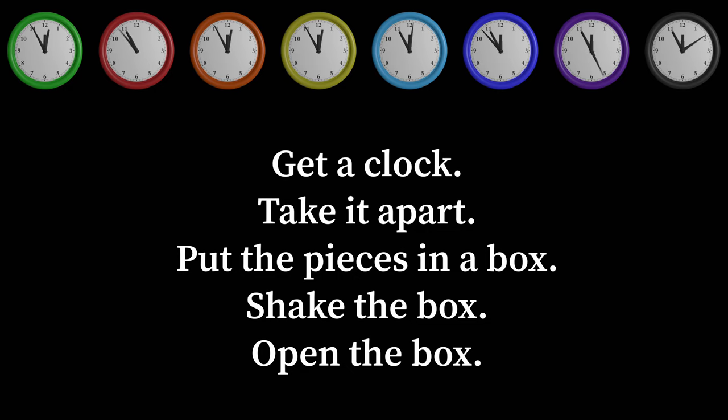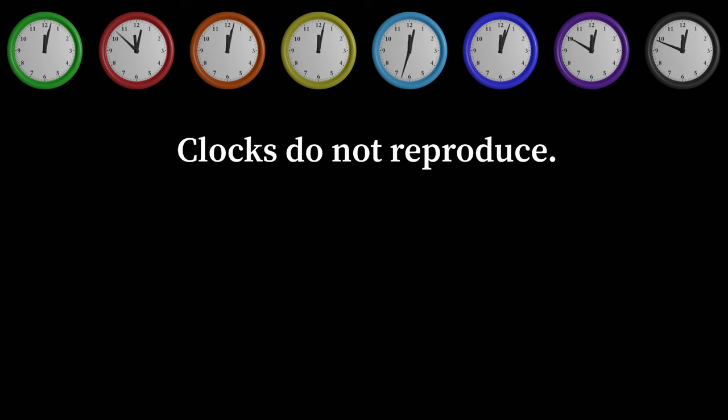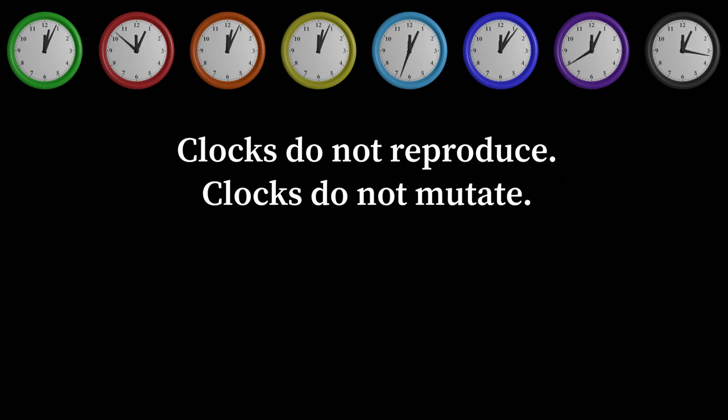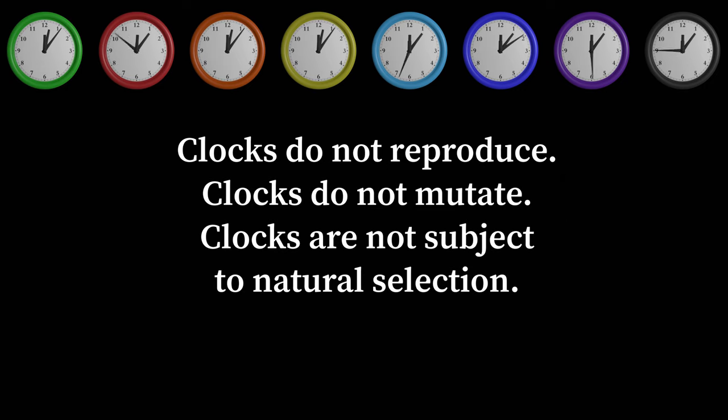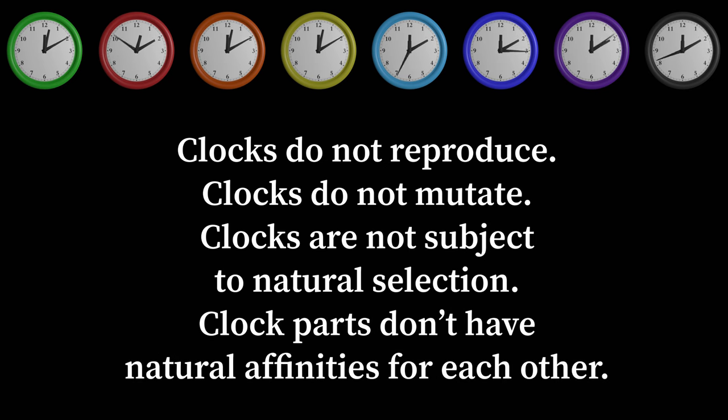Actually, there are four things wrong with it, at least primarily. There are probably tons of others you could point to, but mainly: clocks do not reproduce. Clocks do not mutate. Clocks are not subject to natural selection. And just as importantly, components of clocks don't have natural affinities for each other like the components of cells do.